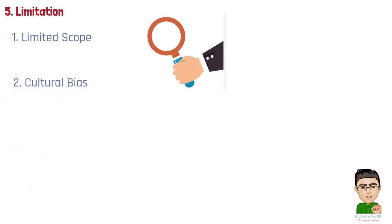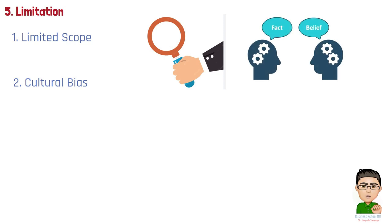Second, cultural bias. The big five traits were primarily developed and validated in Western cultures, raising concerns about their applicability and cultural bias in non-Western contexts. Some traits might manifest differently or hold different significance across cultures.